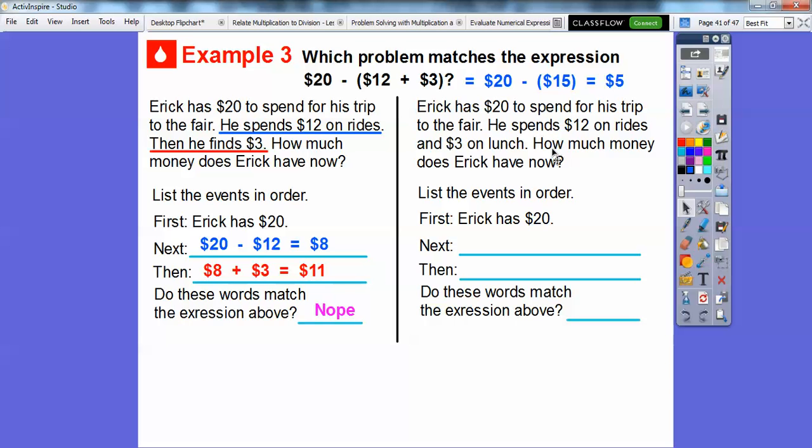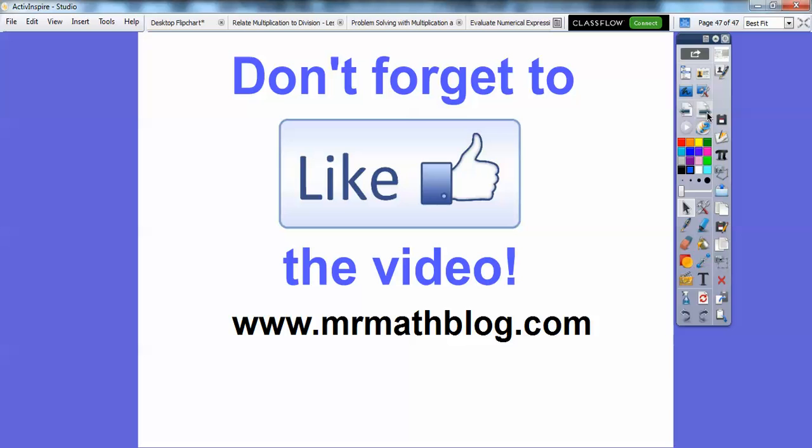Eric has $20 to spend and he spends $12 on rides. Well, let's do that first. So he does $12 on rides. So he has $8 left. And then he spends $3 on lunch. So we're going to take that $8 and we're going to subtract three more dollars. And that's going to give us $5. So do these words match? Yes, they do. They match perfectly. Okay you guys, take care.